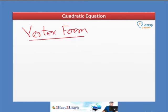Vertex form. In your previous chapter, we discussed how to convert a quadratic general form into a complete square form.